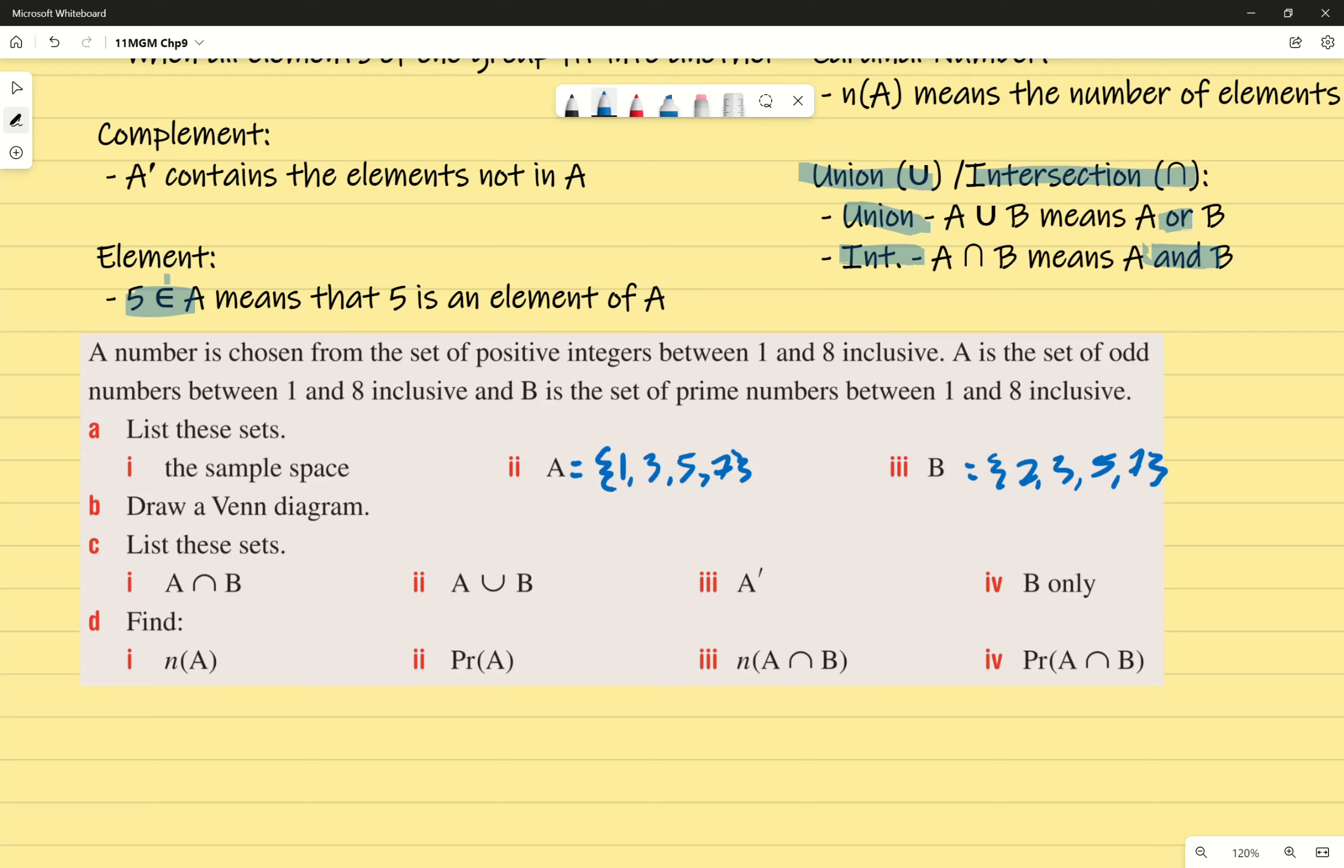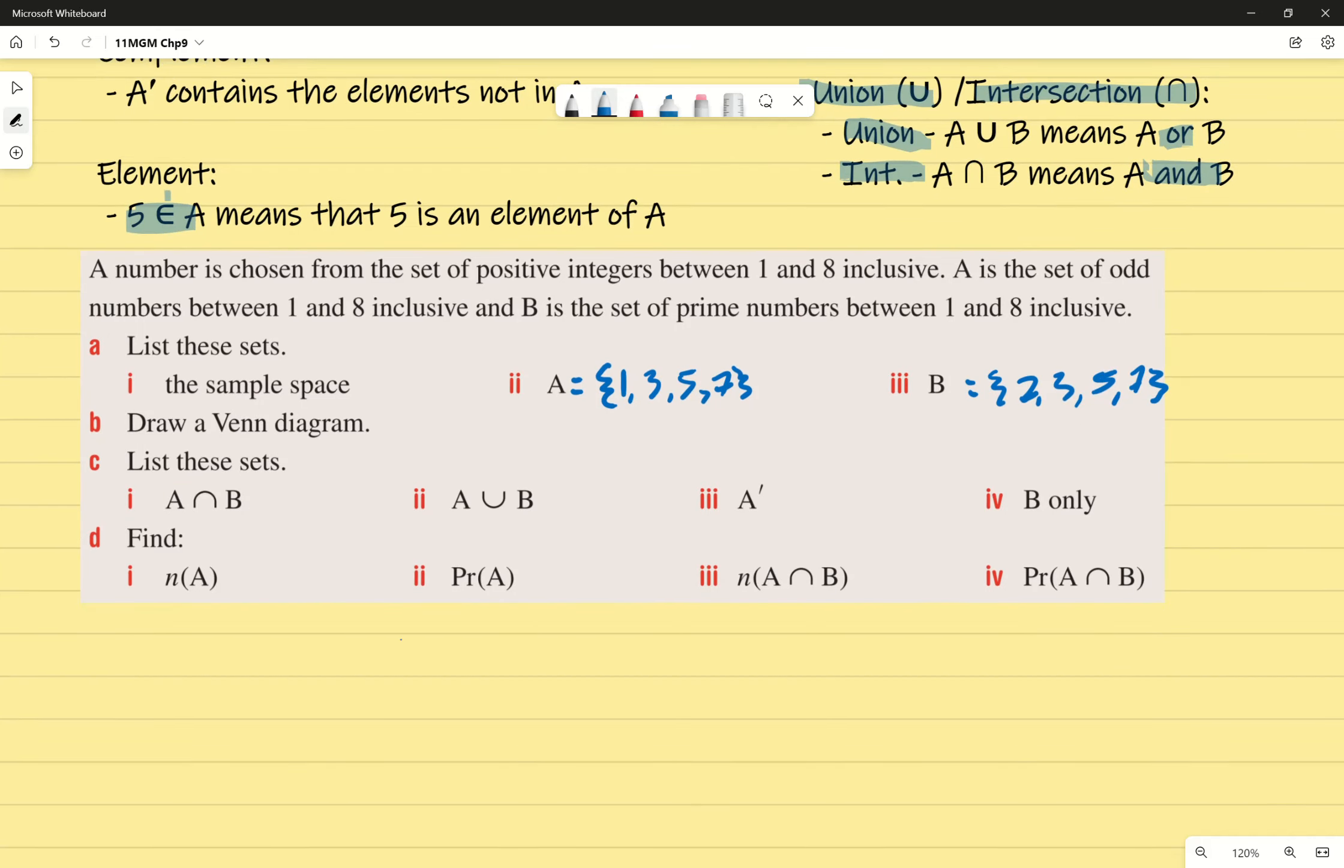Question B. Draw a Venn diagram. So we're going to have our two sets. I'm going to draw my Venn diagram on the bottom, so just so I have a little bit more space. I'm going to label this one A and this one B. Now the numbers from one to eight need to fit into this rectangle. So we're no longer looking at it just in the sense of how many, but what numbers as well.